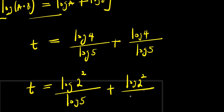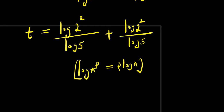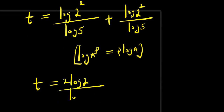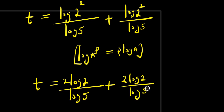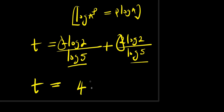Using the power rule — log b to the power e equals e times log b — we have t equals 2 log 2 divided by log 5 plus 2 log 2 divided by log 5. Now we add these together: 2 log 2 plus 2 log 2 gives 4 log 2, so t equals 4 log 2 divided by log 5.